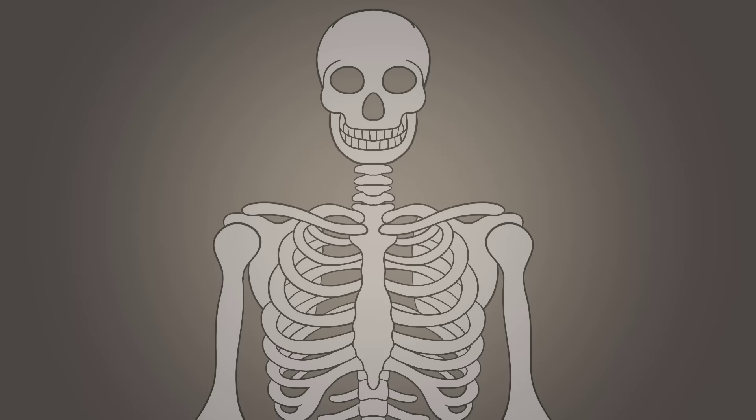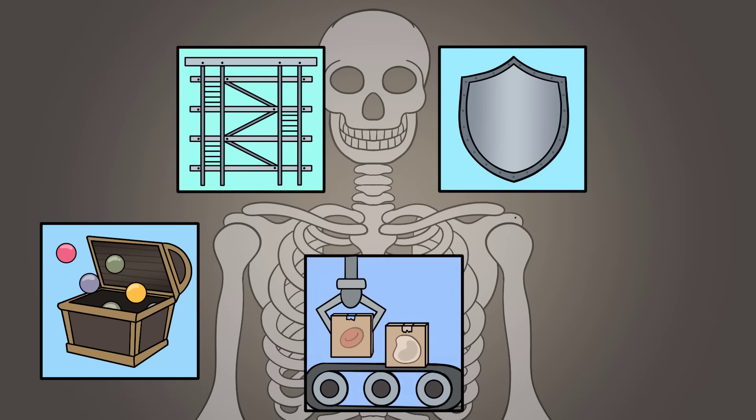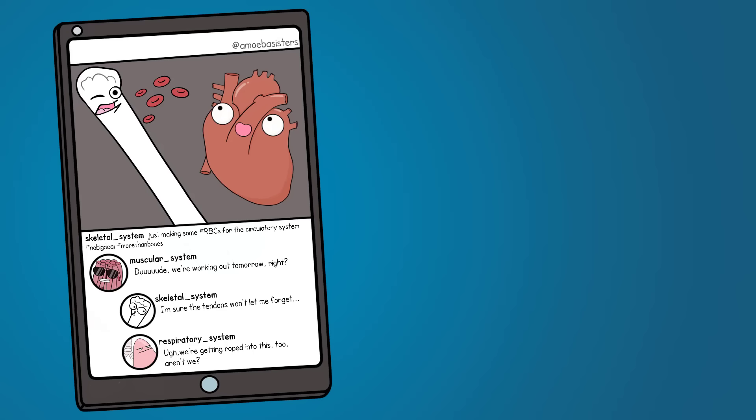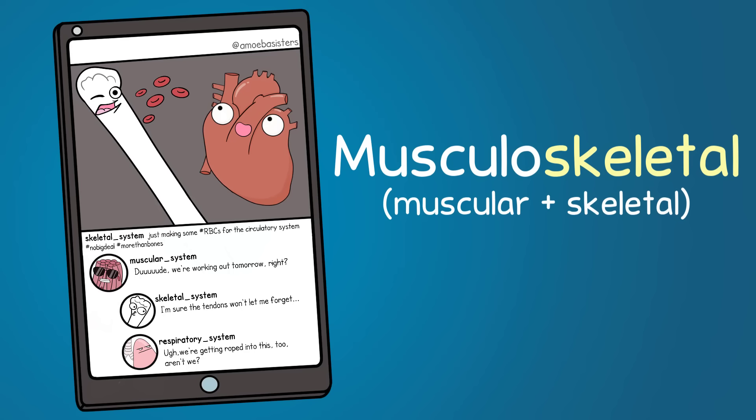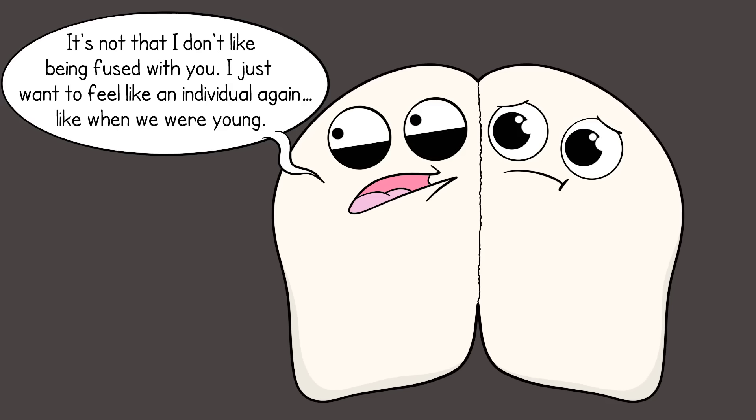Humans have an endoskeleton. The skeletal system has the important job of supporting your body and protecting organs inside. Your skeletal system also provides storage of important minerals, involves the making of red and white blood cells, and, along with the help of muscles, movement. The term musculoskeletal system, used in many textbooks, combines the skeletal system with the muscular system, highlighting their work together.